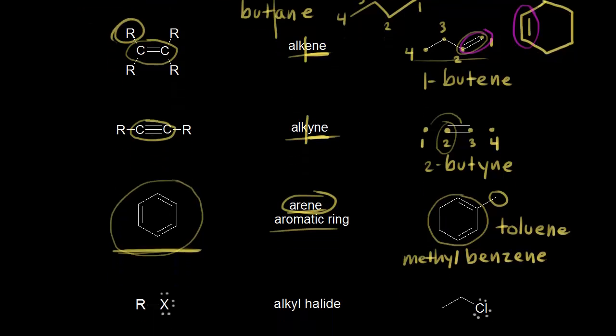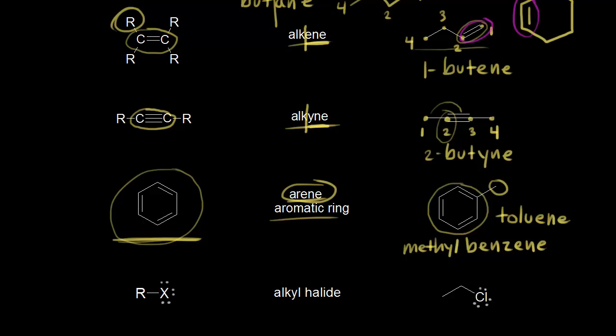Let's look at our next functional group. This is an alkyl halide. Halide refers to a halogen. Over here on the right we have our halogen. X could be a halogen like chlorine or bromine, and R will be our alkyl group.